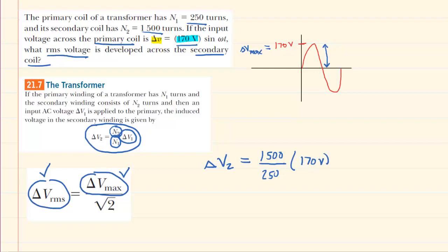So we'll pick up our calculators, and we will punch this in. And when we do so, we can see that the maximum potential difference in the secondary coil is 1020 volts.